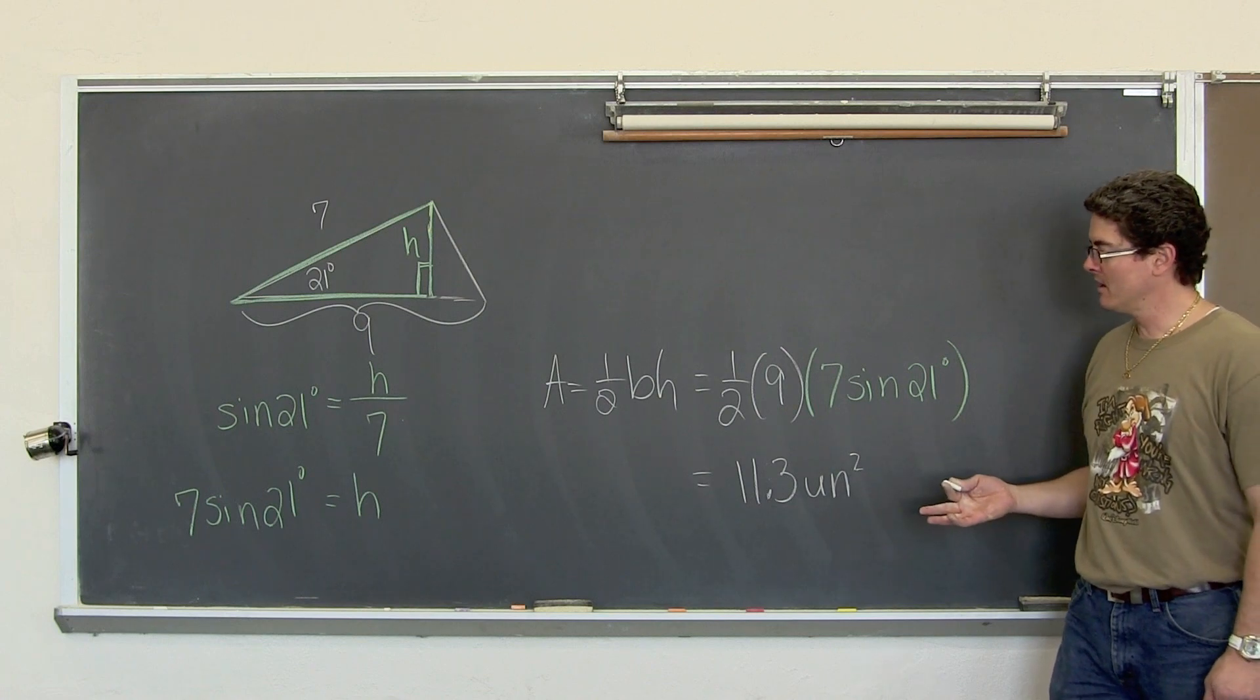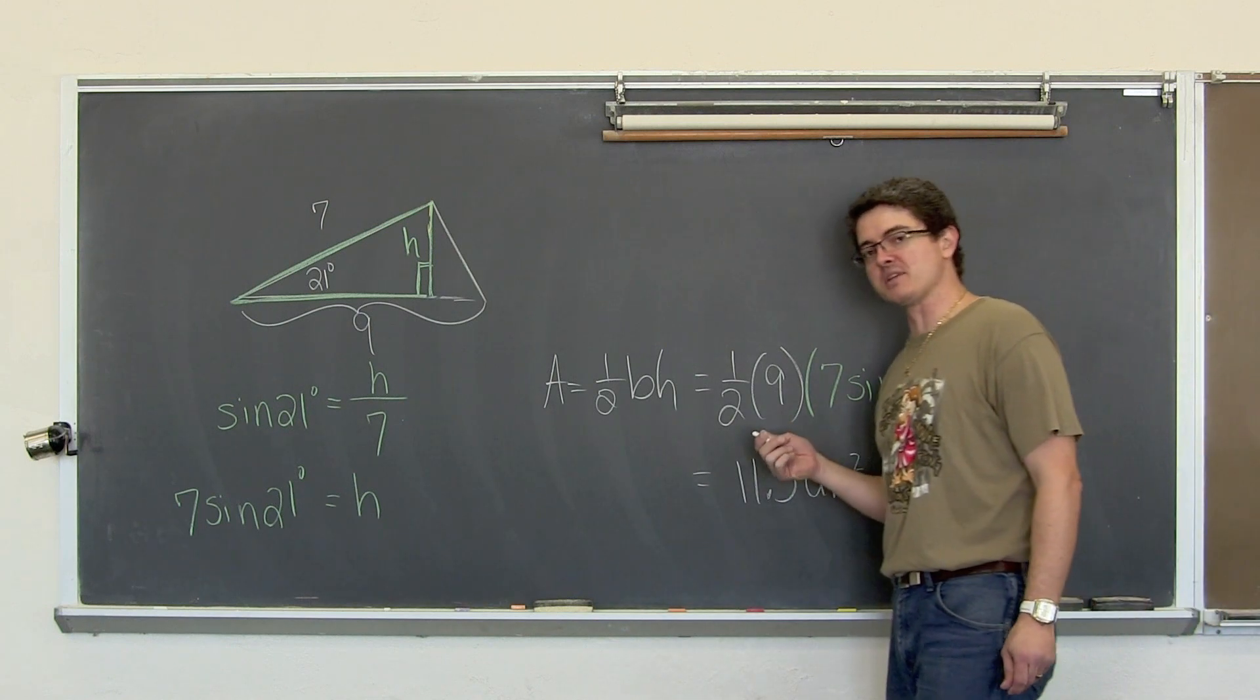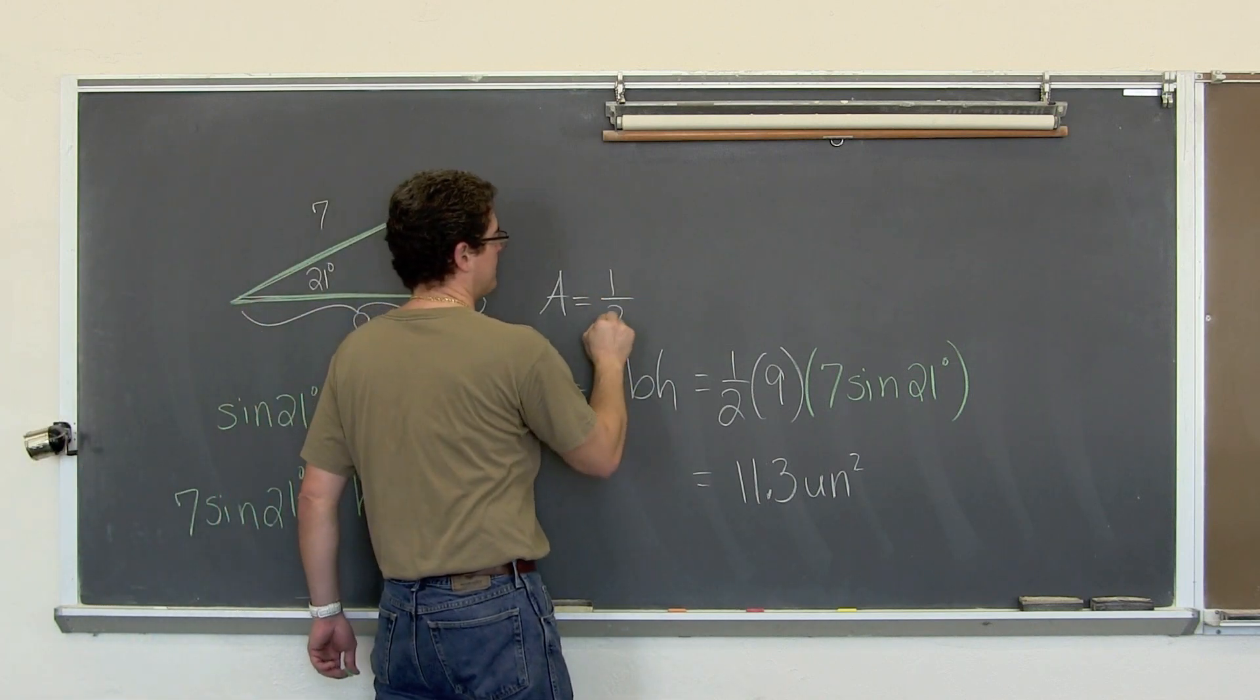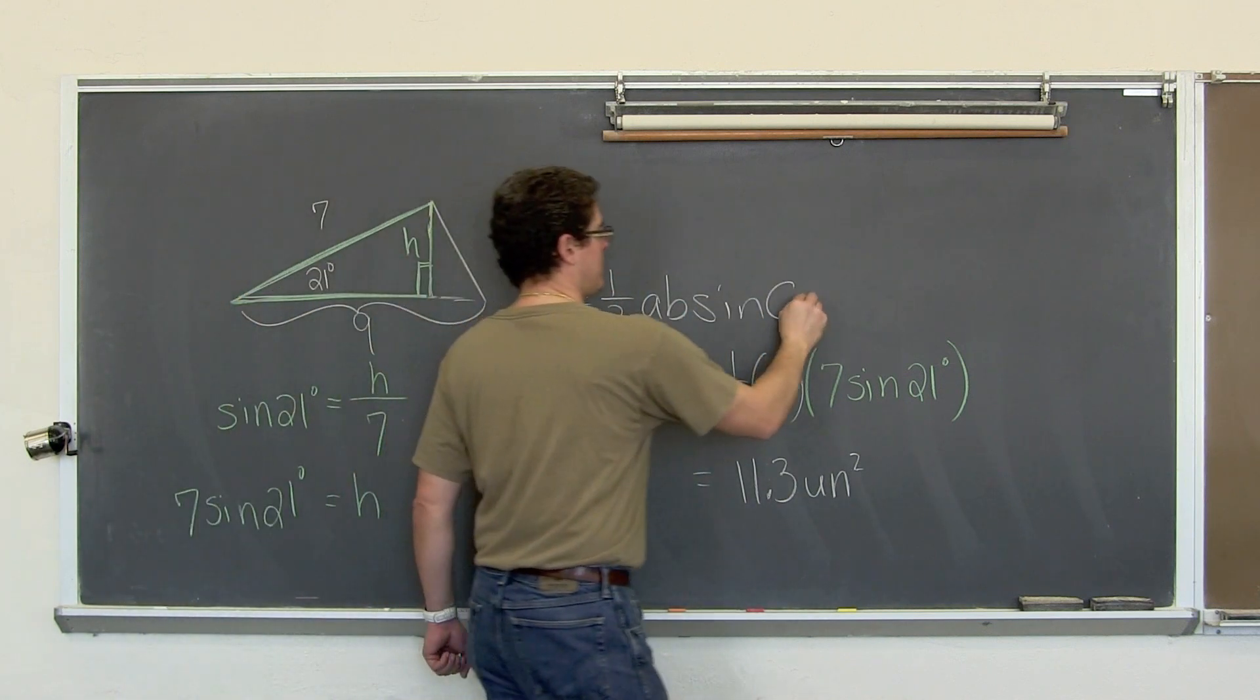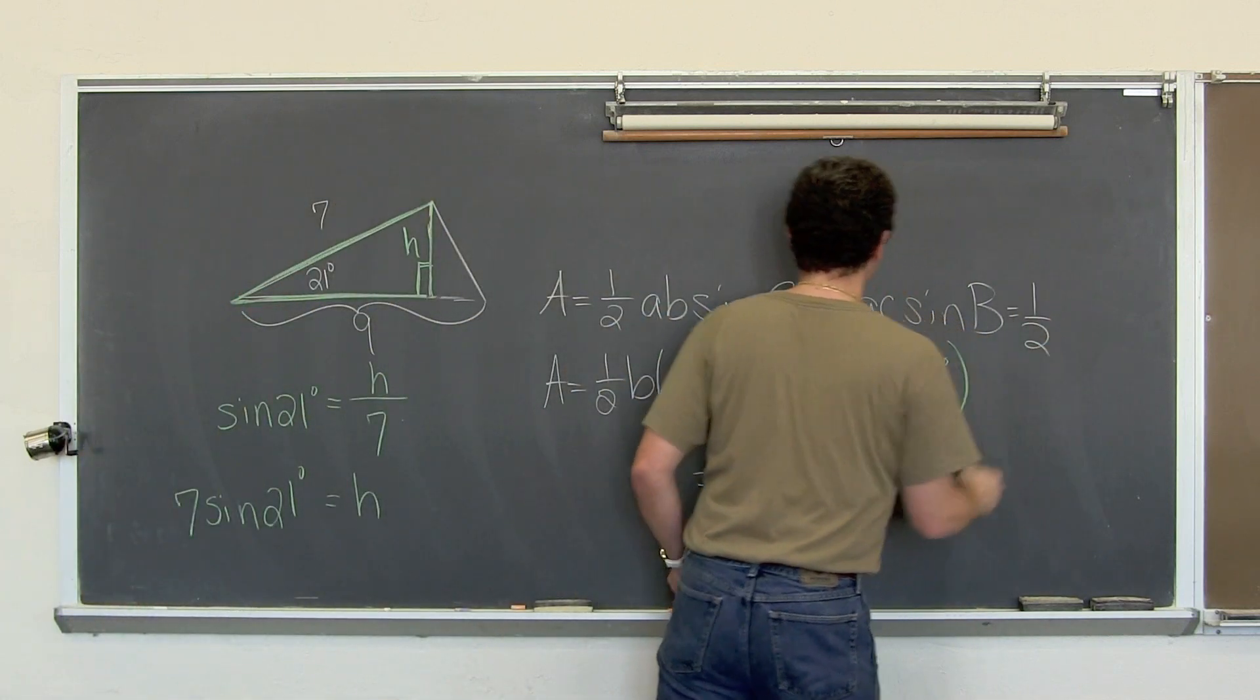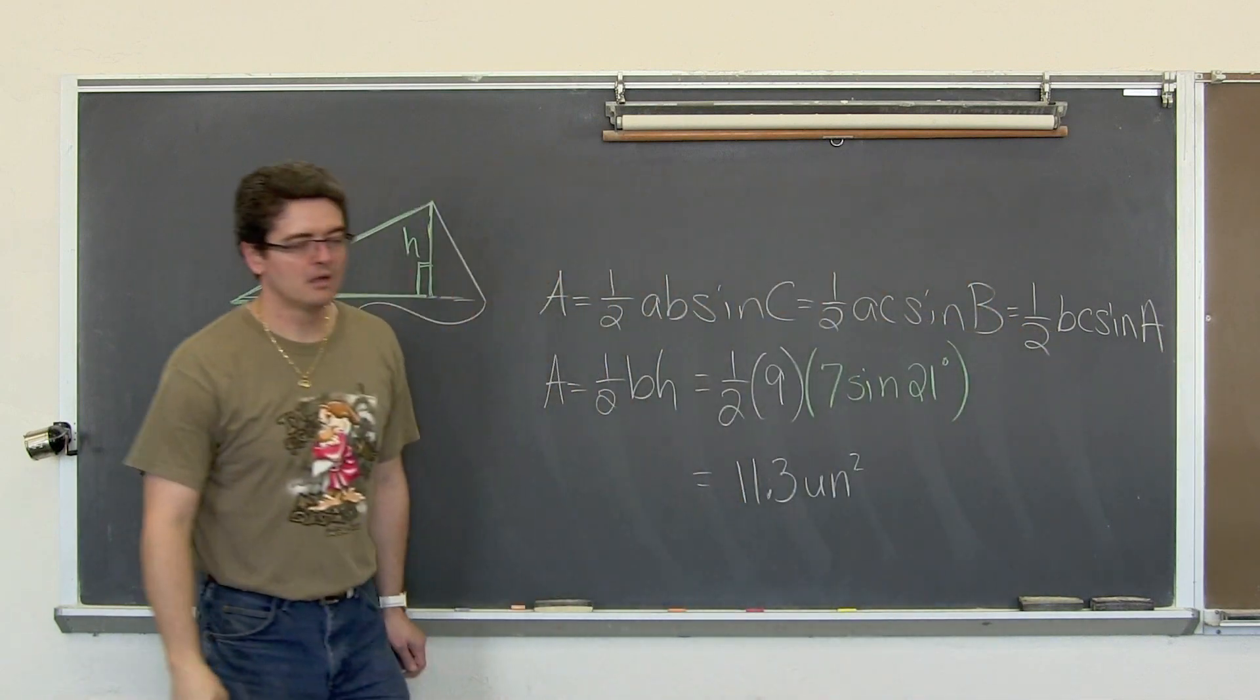And you might have done this work in geometry. But there is another formula that is in your law of sine section that looks like a new formula, but indeed it really is not. The area of a triangle is one-half AB sine of C. And it also says it is equal to one-half AC sine of B. And it is also equal to one-half BC sine of A.